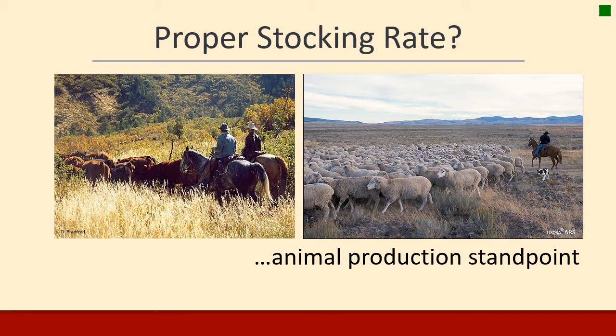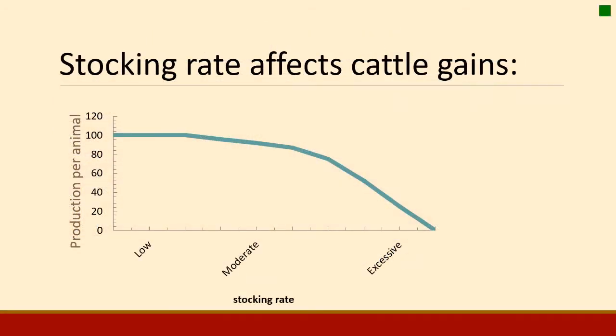Why is the proper stocking rate important from an animal production standpoint? If you look at this graph, at a low stocking rate, animals produce exactly what they're able to produce — their genetic potential. Then at some point between a low and moderate rate, as stocking rate gets higher and there are more animals in that pasture, each animal won't gain as well as they could. And at some point there's a rapid decline where you put another animal on the ranch and all the animals come back thinner.